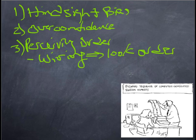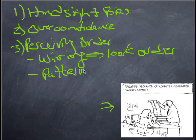But we look for order. We look for patterns. And that's what happens. So when we perceive order in what we know to be random events, we tend to, again, overestimate with overconfidence. And a little bit like this little cartoon suggests, a bizarre sequence of computer-generated random numbers. We look, like I said, we just tend to look for order.